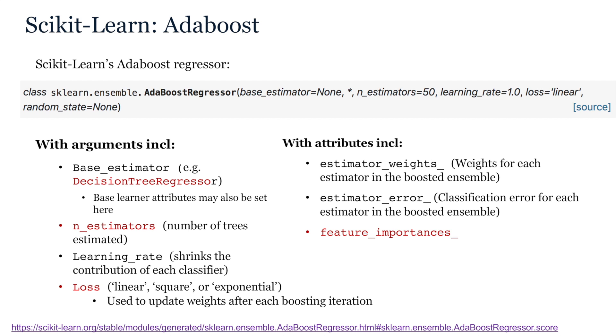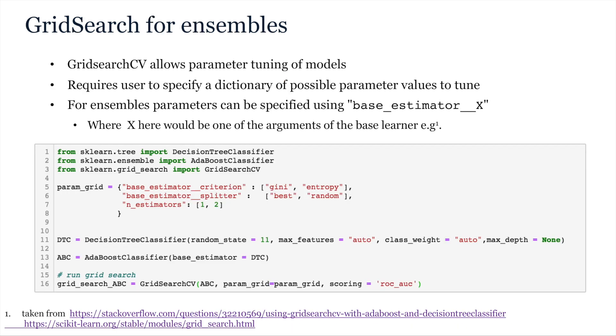For regression, arguments are fairly similar. However, you also have a choice of which loss you use when updating your weights, with scikit-learn offering linear, square or exponential.